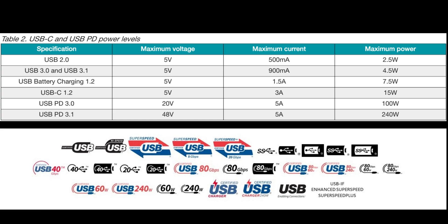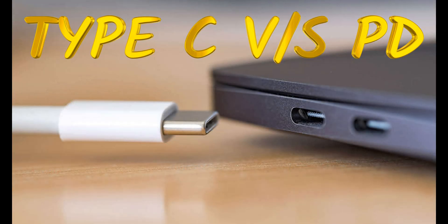USB 2.0 has maximum 5V, 500mA — 2.5W. USB 3 and 3.1: 5V, 900mA — 4.5W. USB battery charging 1.2: 5V, 1.5A — 7.5W. USB PD 3.0: 20V, 5A — 100W. USB PD 3.1: 48V, 5A — 240W.